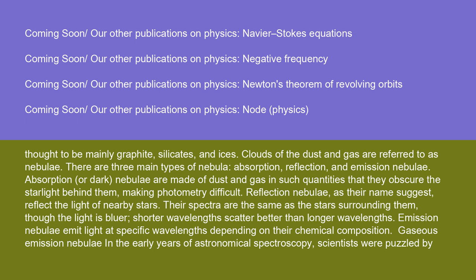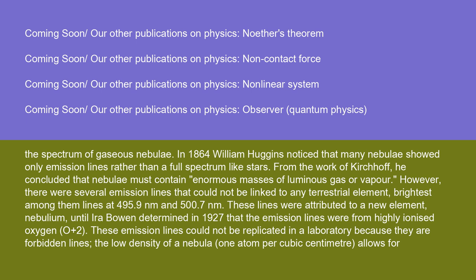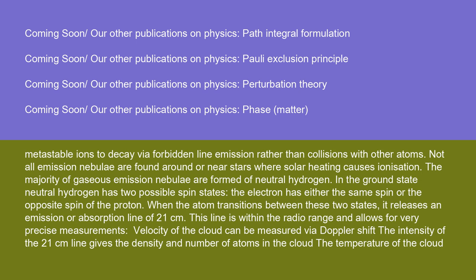Emission nebulae emit light at specific wavelengths depending on their chemical composition. In the early years of astronomical spectroscopy, scientists were puzzled by the spectrum of gaseous nebulae. In 1864, William Huggins noticed that many nebulae showed only emission lines rather than a full spectrum like stars. From the work of Kirchhoff, he concluded that nebulae must contain enormous masses of luminous gas or vapor. However, there were several emission lines that could not be linked to any terrestrial element — brightest among them lines at 495.9 nm and 500.7 nm. These lines were attributed to a new element called nebulium, until Ira Bowen determined in 1927 that the emission lines were from highly ionized oxygen, O⁺². These emission lines could not be replicated in a laboratory because they are forbidden lines. The low density of a nebula — one atom per cubic centimeter — allows for metastable ions to decay via forbidden line emission rather than collisions with other atoms.